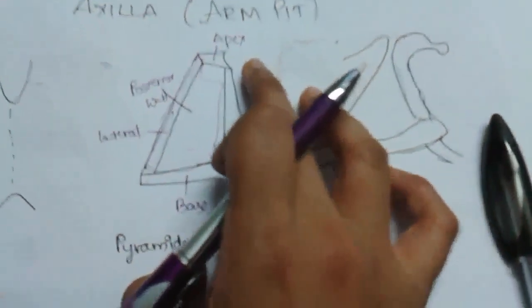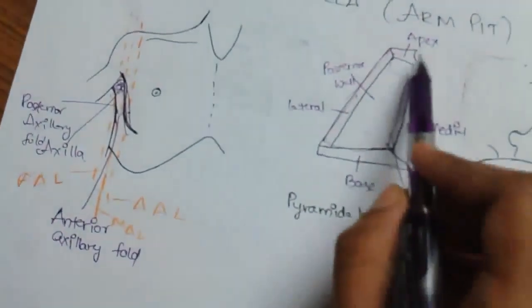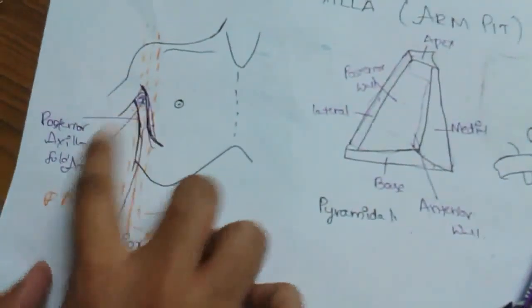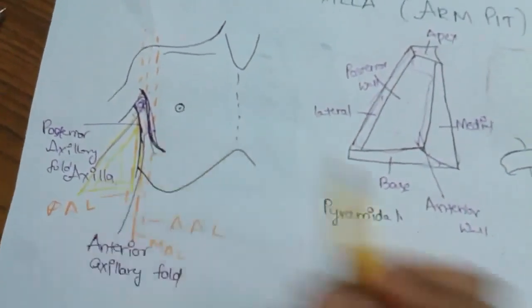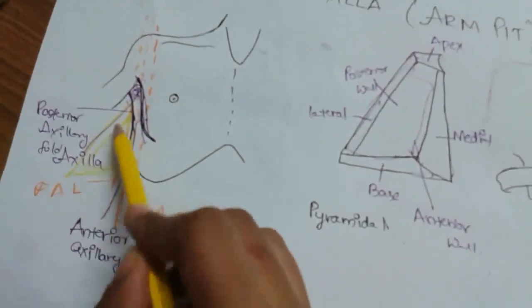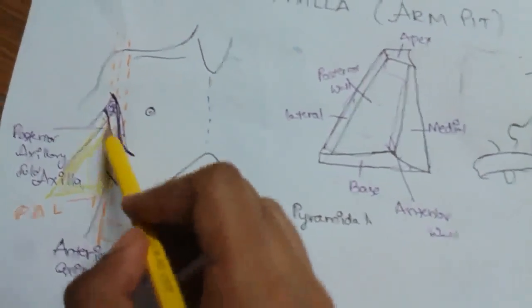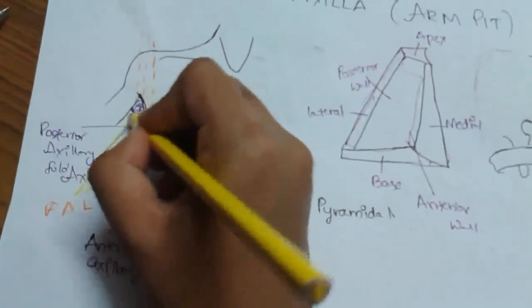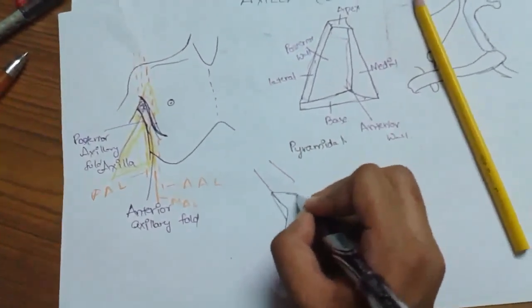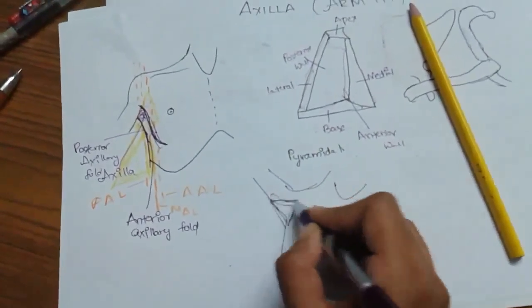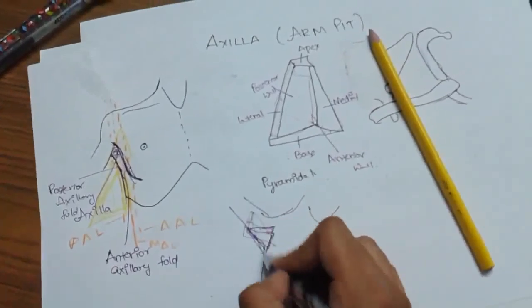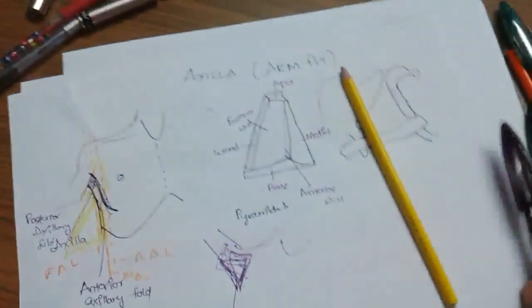The apex is also called the cervico-axillary canal. If you take this whole pyramid and place it here, it looks like this — with an apex at the top, a base at the bottom, lateral and medial walls, and a posterior wall. If you totally abduct the arm, you can see this triangular shape with an apex at the top.